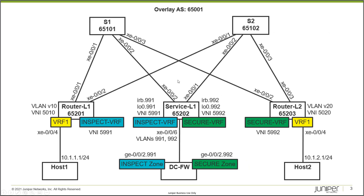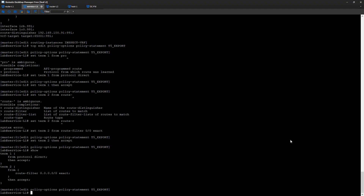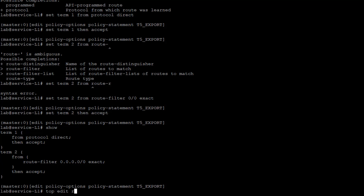Reviewing the topology: router L1's inspect VRF is configured, router L2's secure VRF is configured, and the service leaf's inspect VRF is done. Now we need to configure the secure VRF on service leaf L1, which must match the secure VRF on router L2 — with VNI 5992 and matching route targets. Let's jump back to the CLI of service L1.